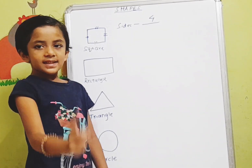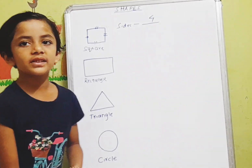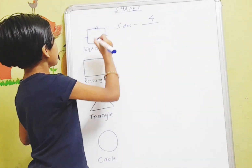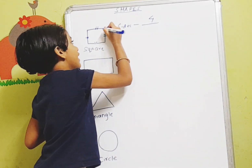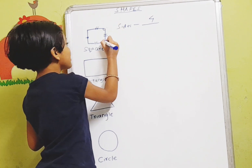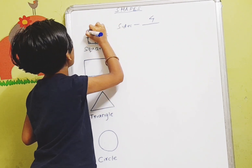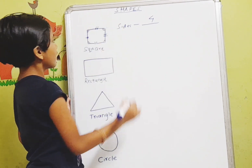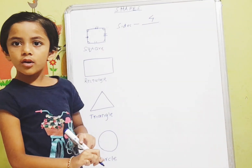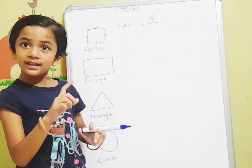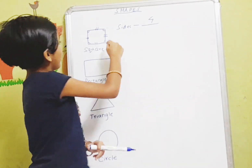Let's count corners: one, two, three, four. There are four corners in a square.